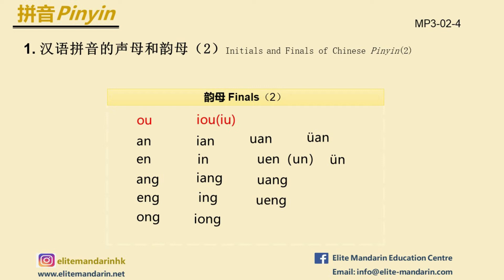Let's do it again: 欧, 油, 安, 烟, 腕, 圆, 恩, 阴, 温, 云, 昂, 阳, 汪, 恩, 阴, 汪, 忧.